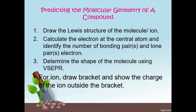Let's predict the molecular geometry of a compound. Firstly, you need to draw the Lewis structure of the molecule or ion. Secondly, you have to calculate the electrons at the central atom and determine whether they are bonding pairs or lone pairs. Finally, you have to determine the shape using the VSEPR method — the valence electron pairs surrounding a central atom repel one another, so once you determine how many bonding pairs and lone pairs there are, they should be arranged as far apart as possible. For ions, draw a square bracket and show the charge of the ion outside the bracket.